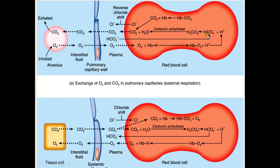In the lungs, hemoglobin releases protons. These protons are captured by bicarbonate ions, which diffuse from plasma into red blood cells, and reversal of the chloride shift occurs. Bicarbonate ions accept the protons and are converted to carbonic acid via carbonic anhydrase, then to carbon dioxide, which is exhaled. In this way, oxygen is transferred through RBCs to the tissues and carbon dioxide is transported from tissues to the lungs.